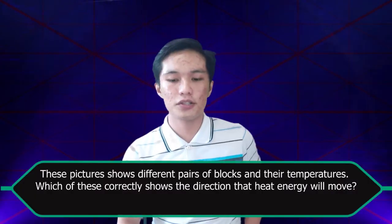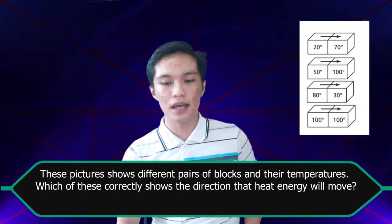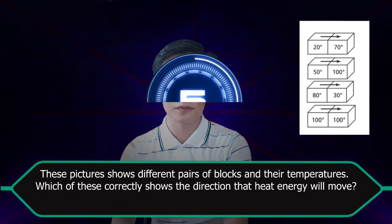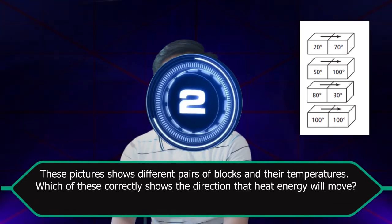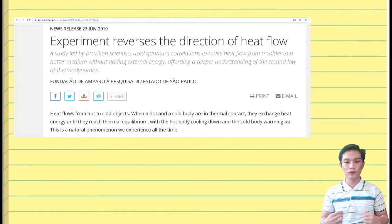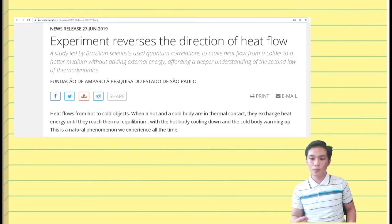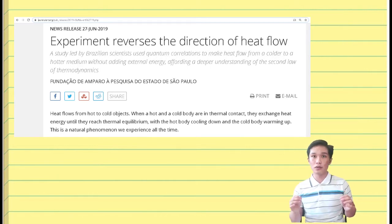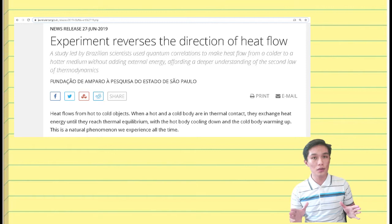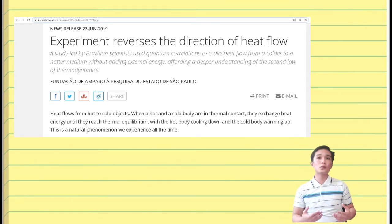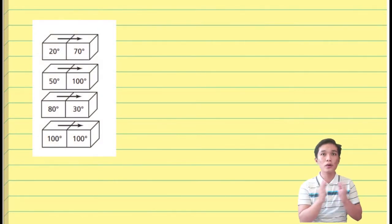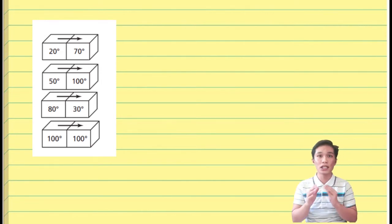These pictures show pairs of metal blocks and their temperatures. Which correctly shows the direction that heat energy will move? We know that heat flows from hot to cold objects. When a hot and cold body are in thermal contact, they exchange heat energy until they reach thermal equilibrium, with the hot body cooling down and the cold body warming up. We just have to see which block is hotter and which is colder, and whether the hotter block is giving heat to the colder block.